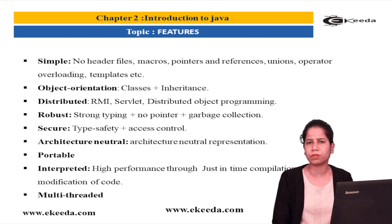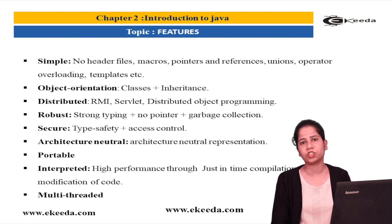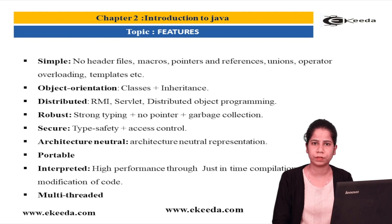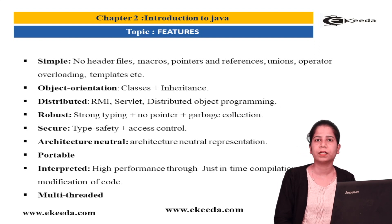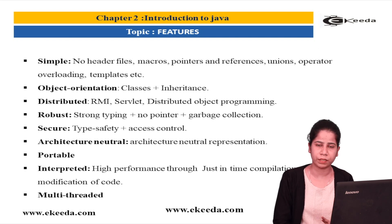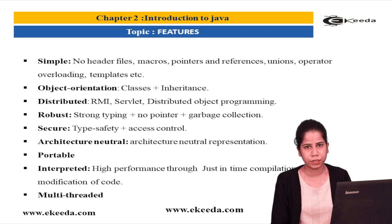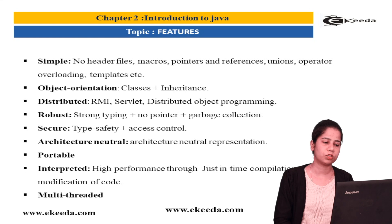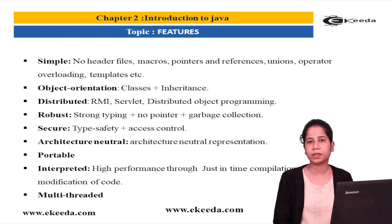Java is also a type-safe language. Every conversion that happens has its type checked at each point, so errors that occur due to type casting are avoided. This also contributes to making Java a robust language. So strong typing, no pointers, garbage collection, and exception handling are the features that make Java robust.